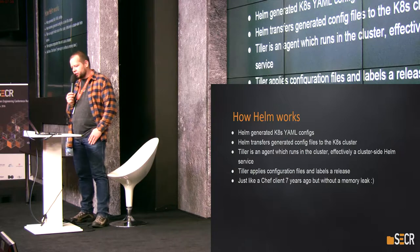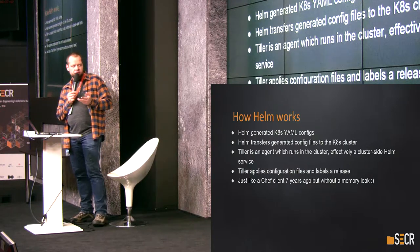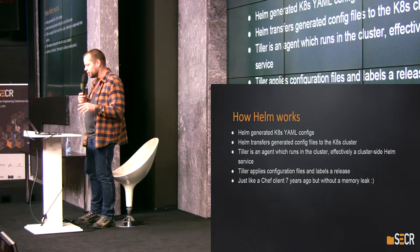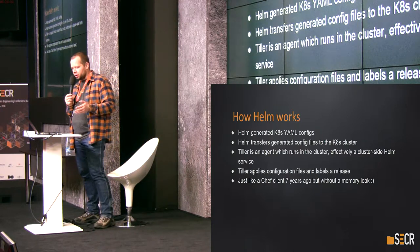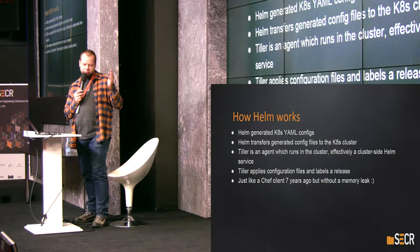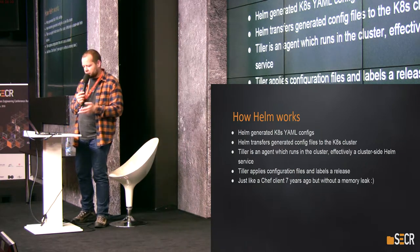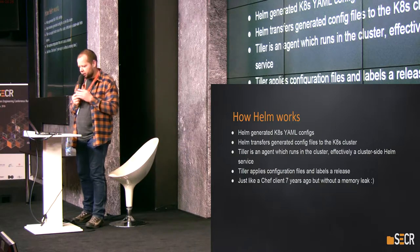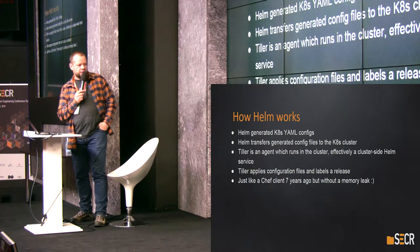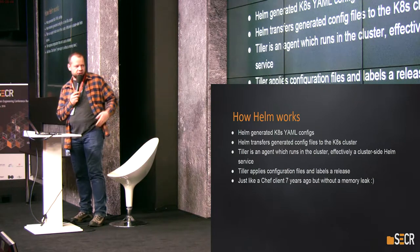How does Helm work? What is Tiller? Helm generates Kubernetes YAML configs using its custom template engine, transfers the config files to the Kubernetes cluster, and instructs Tiller to start deploying them. Tiller is an agent that actively runs in the cluster — it's the cluster-side part of the Helm ecosystem. Tiller applies configuration files and labels a release, so you can perform updates, delete, or purge releases using the client-side Helm command-line utility. It reminds me of Chef Client, which acted basically the same way seven years ago — but Tiller doesn't have the nice memory leak feature that killed my hosts.